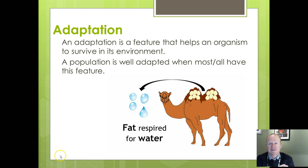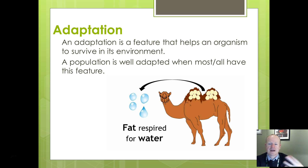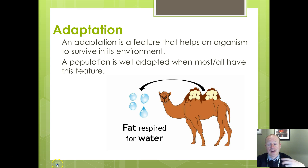Adaptation refers to features that help an organism to survive in its environment, and populations which are well adapted will mostly have that feature. For example, the camel and its hump, which is a fat store to help it survive in areas where water is scarce. The fat can be respired to produce water and also provides food stores for long periods of time in areas where there may not be much food or water.